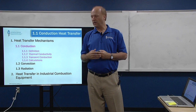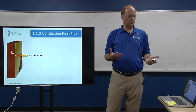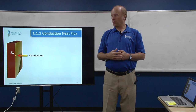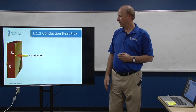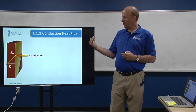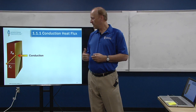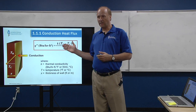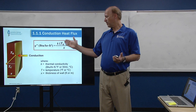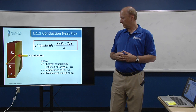Conduction — we have conduction through a solid. In this course, we'll consider one-dimensional plane conduction. We have a high temperature and a low temperature, and assuming thermal conductivity doesn't vary much with temperature, we have a straight-line temperature profile through the material. Using Fourier's law of conduction for one-dimensional heat flux through a plane surface, the equation is: heat flux equals thermal conductivity times (T hot minus T cold), divided by the thickness of the material. Pretty simple equation.